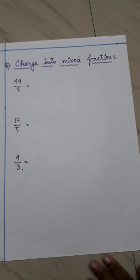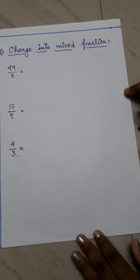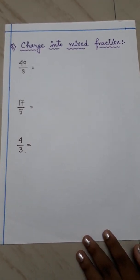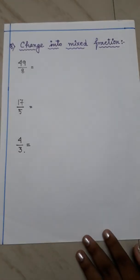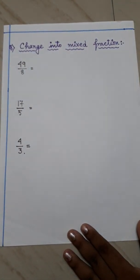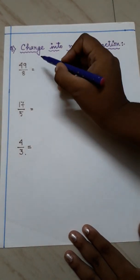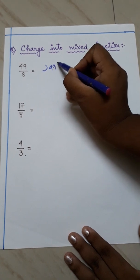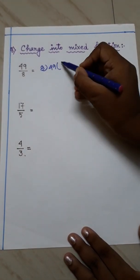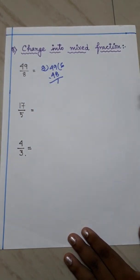Next is changing an improper fraction into a mixed fraction. Here an improper fraction will be given and you have to convert it into a mixed fraction. The first example is 49 by 8. We have to do the division: 49 divided by 8. Since 8 times 6 is 48, the quotient is 6 and the remainder is 1.